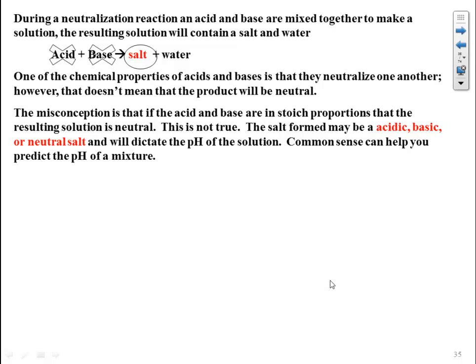Common sense can help predict the pH. If you have a strong acid plus a strong base, both ionize 100%, so their strengths cancel each other out, and you end up with a neutral salt. This is essentially the only true neutralization where pH equals 7. A strong acid combined with a strong base will always produce a neutral solution with a pH of 7.